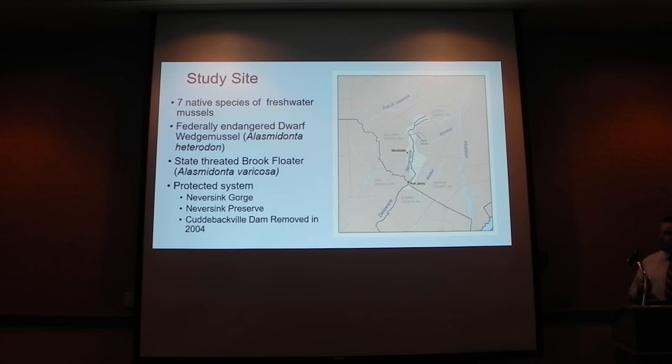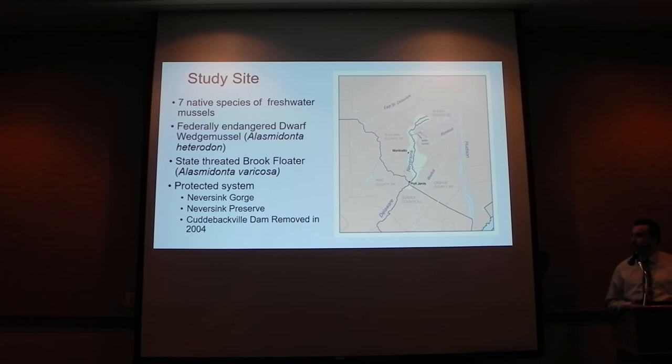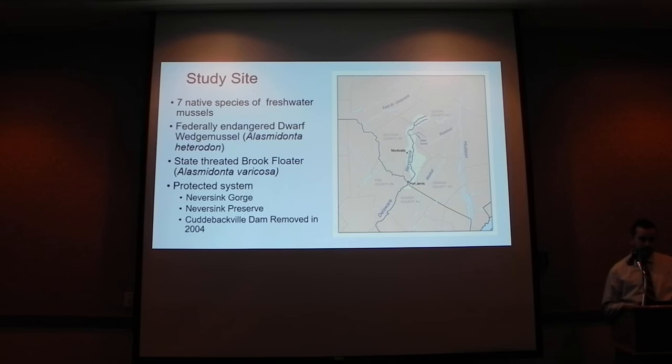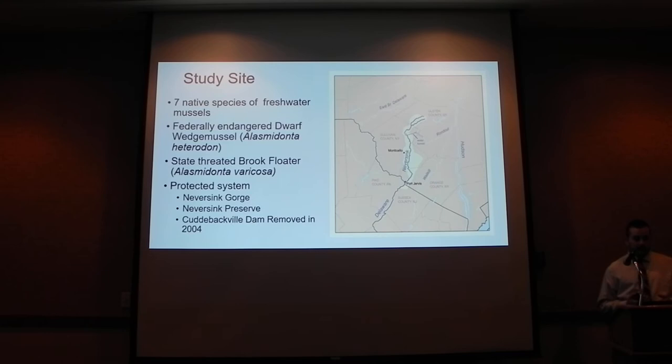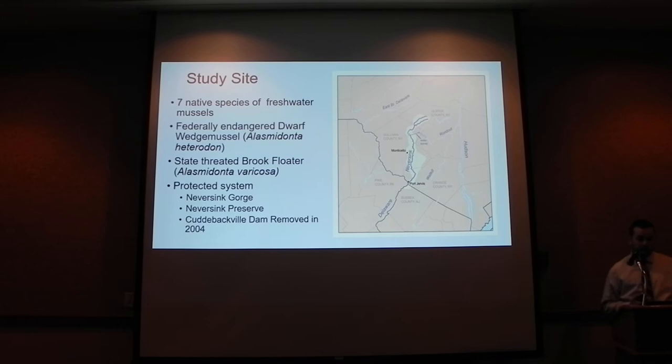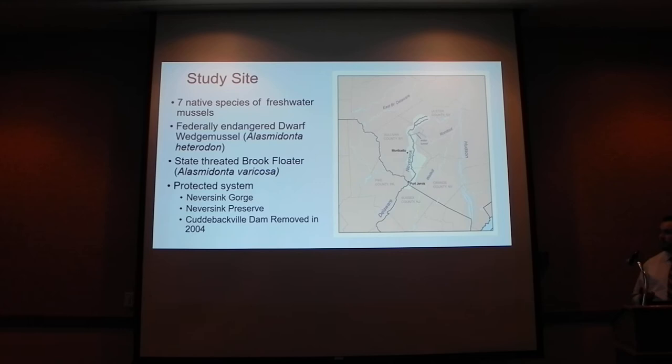There are seven native species of freshwater mussels in the Neversink, one of which is the dwarf wedge mussel, which is federally endangered, and the Brook Floater, which is state threatened here in New York State. The Neversink is a pretty protected system, with heavy forest coverage around the reservoir and large preserved land parcels adjacent to the river, like the Neversink Gorge and Neversink Preserve. In 2004, a dam was removed in Cuddybackville — one of the first dams removed in New York State, particularly for environmental reasons.